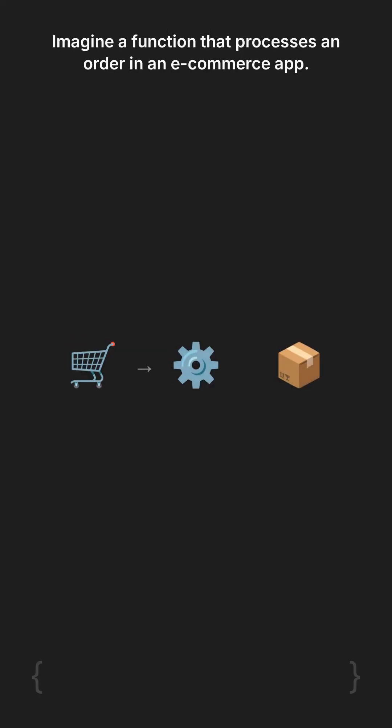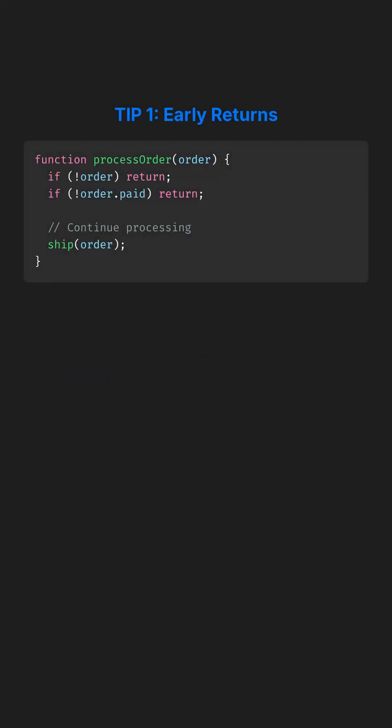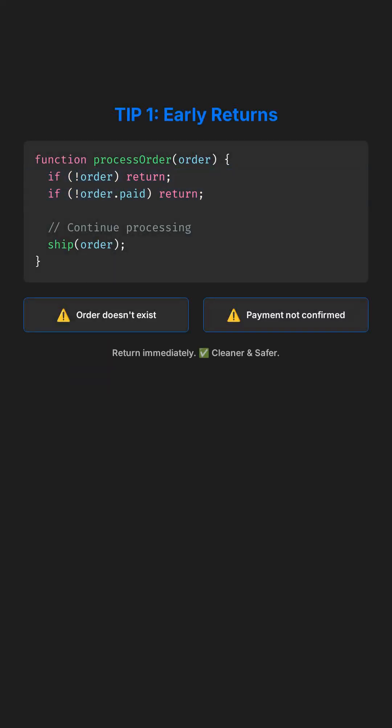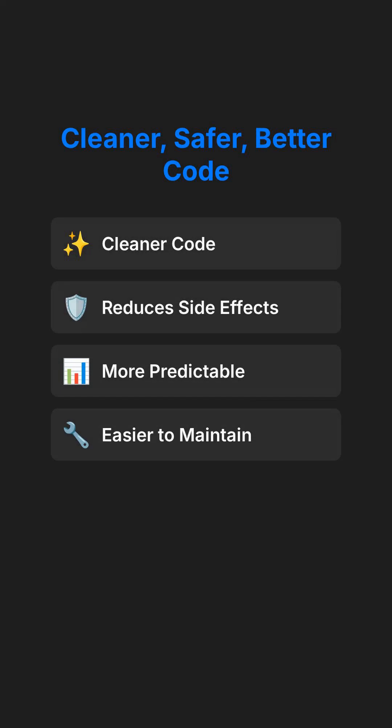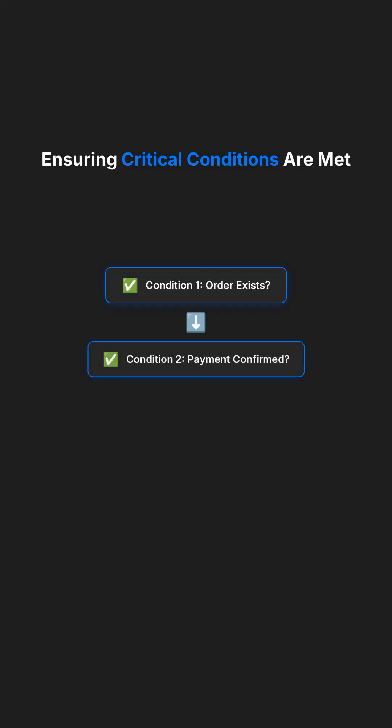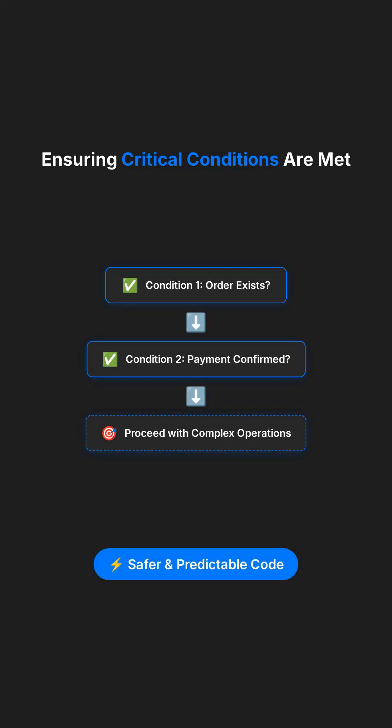Imagine a function that processes an order in an e-commerce app. If the order doesn't exist or payment isn't confirmed, return immediately. It's cleaner and reduces side effects, making your code more predictable and easier to maintain. This approach ensures that critical conditions are met before proceeding with complex operations.